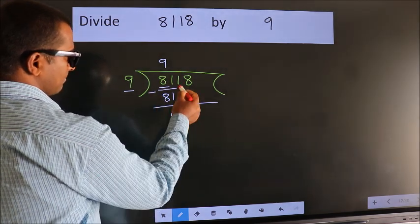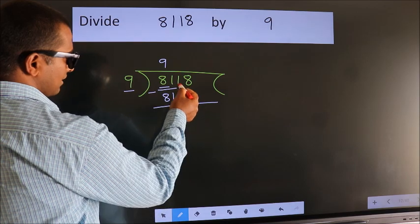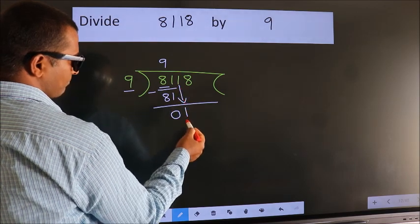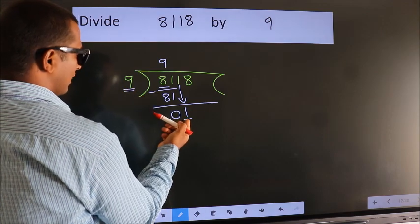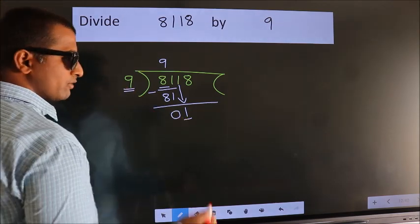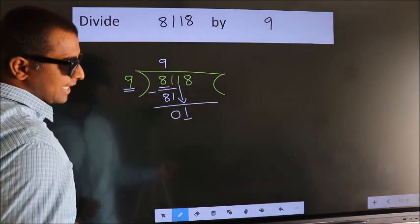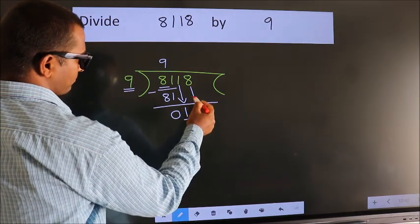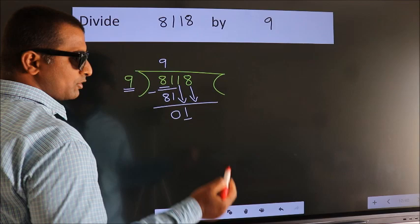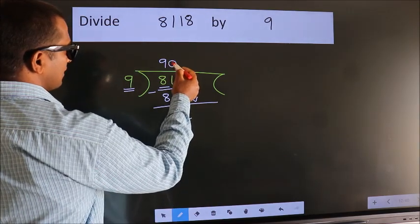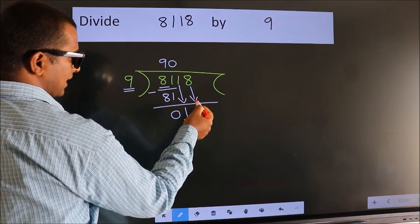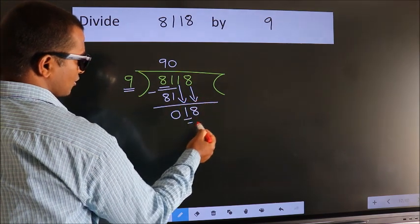After this, bring down the next number. So 1 down. Here we have 1, here 9. 1 is smaller than 9, so we should bring down the second number. And the rule to bring down the second number is, put 0 here. Then only we can bring down this number. So 18.